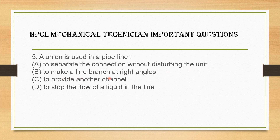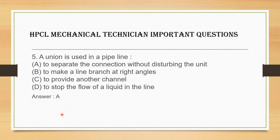Next question about pipe fittings: options include — to make a line branch at right angles, to provide another channel, to stop the flow of a liquid in the line, to cap the line, to separate the connection without disturbing the unit. The answer is: a union is used to separate the connection without disturbing the unit, making it easy to dismantle.